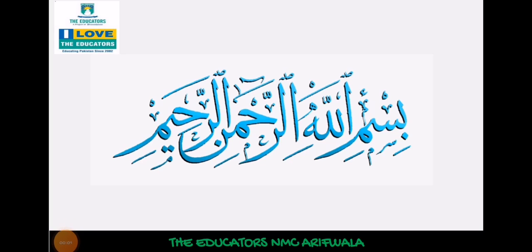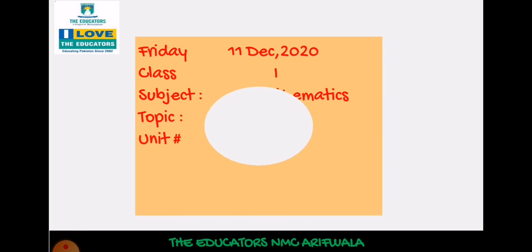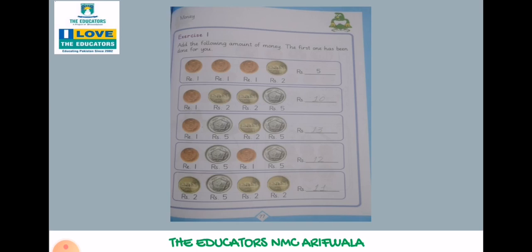Allah is Rahmanir Raheem. Assalamu alaikum, dear students. How are you all? I hope you all are fine. Today is Friday and the date is 11th of December 2020. Class 1, subject is Mathematics and the topic is Money. Unit number is 5. Open your book page number 77.